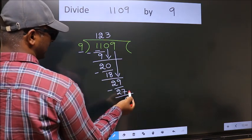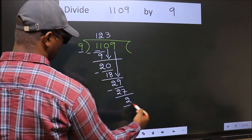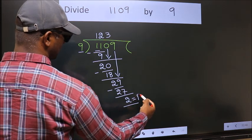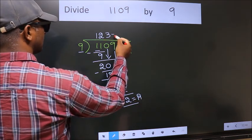No more numbers to bring down, so we stop here. This is our remainder. This is our quotient.